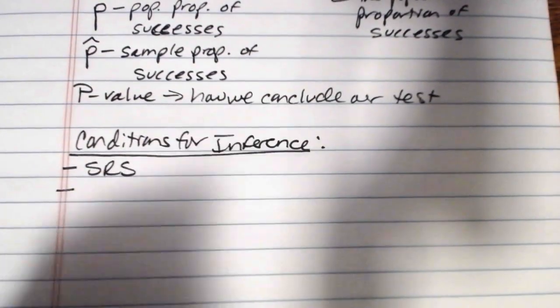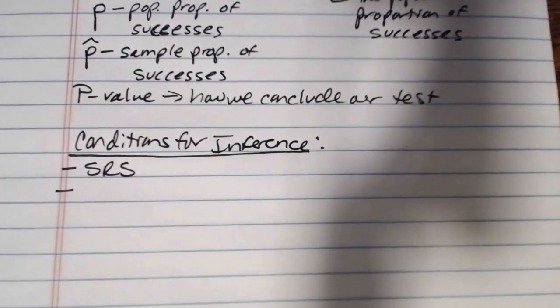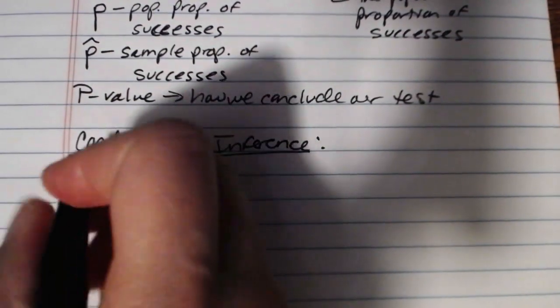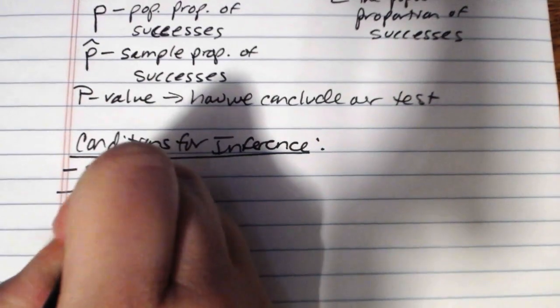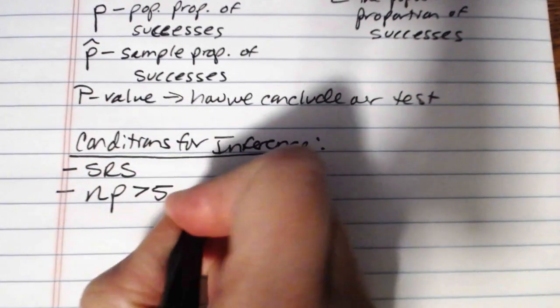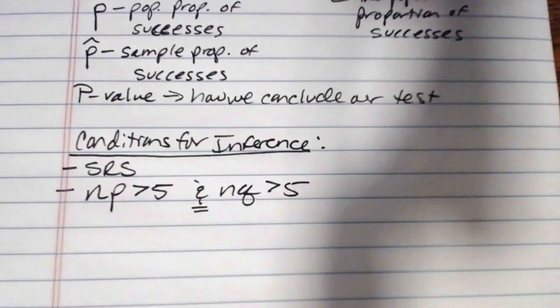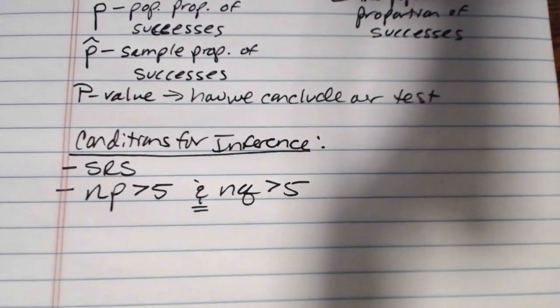The method for testing a proportion p, whether we're going to do it by hand or use the calculator program, presupposes that p hat follows a normal distribution. And we know from our section on sampling distributions that p hat will follow a normal distribution when np is greater than 5 and nq is greater than 5. Both of these things have to be greater than 5 in order to proceed with the inference.